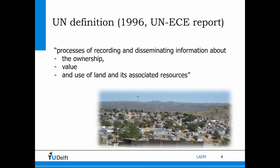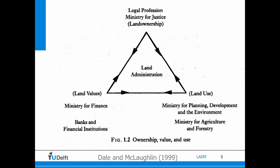The United Nations defines land administration as the process of recording and disseminating information about ownership, value, and the use of land and the associated resources — think of buildings, trees, and other topics. Here in this diagram of McLaughlin and Dale we see the three aspects: the land value, the land use, and the land ownership.